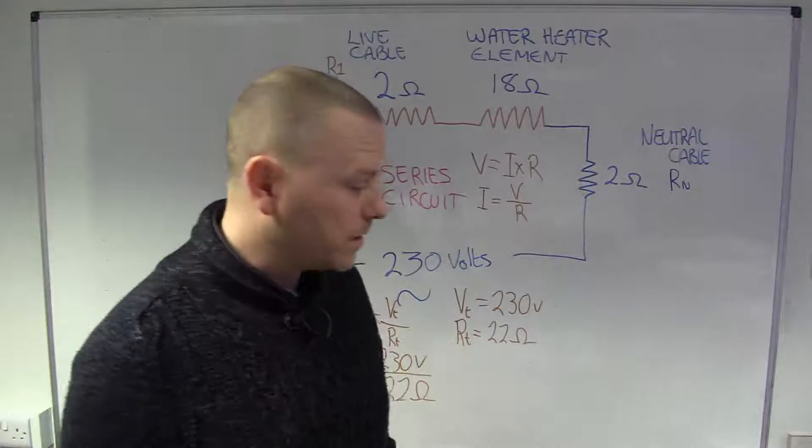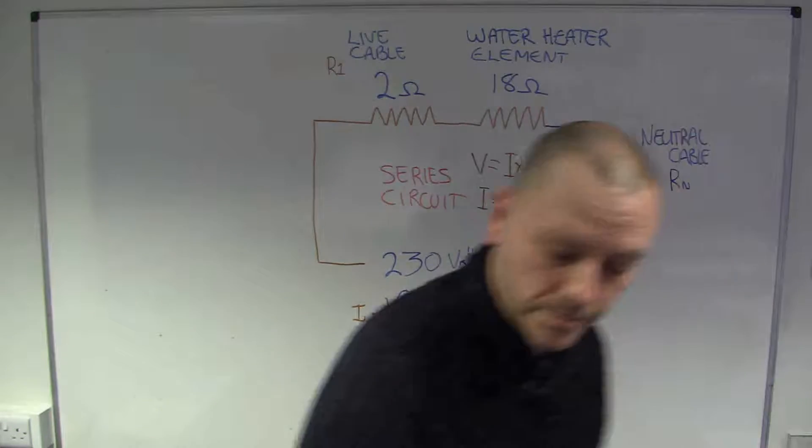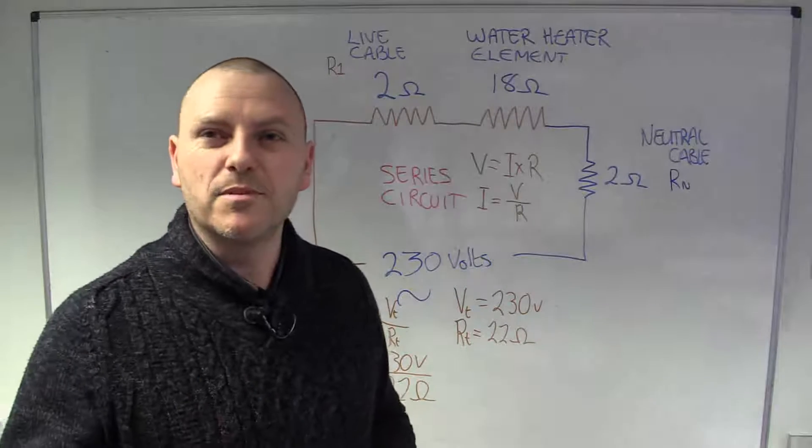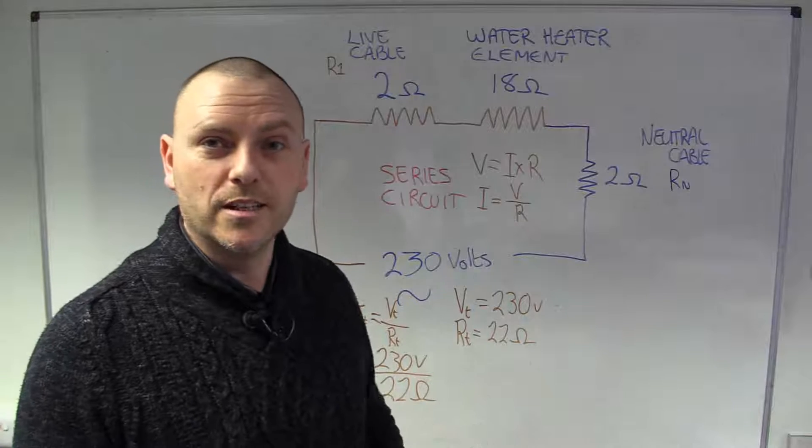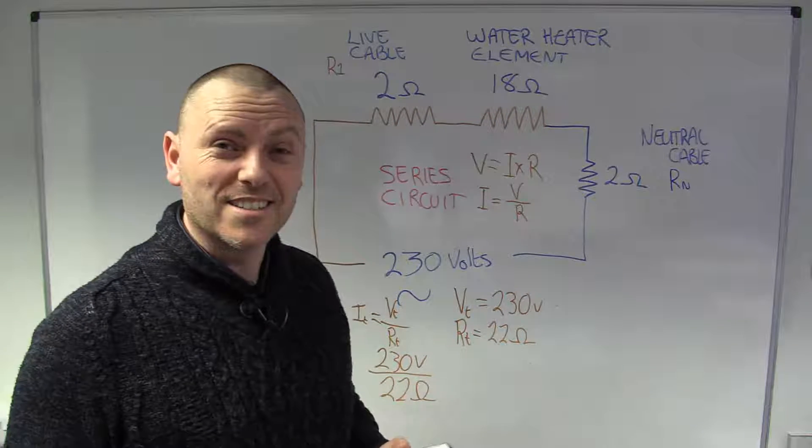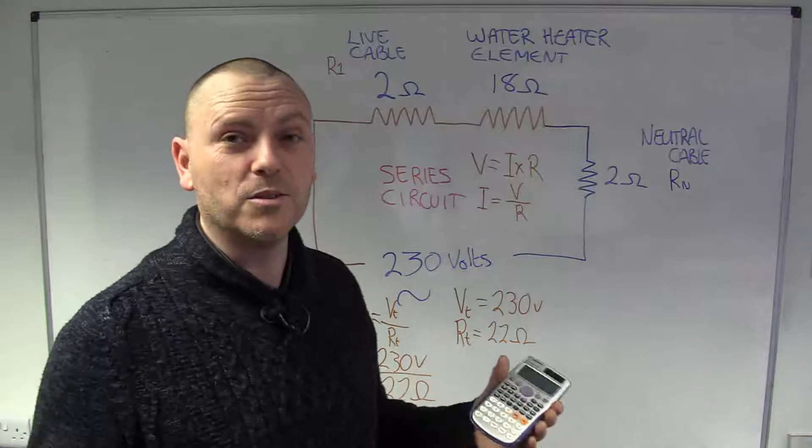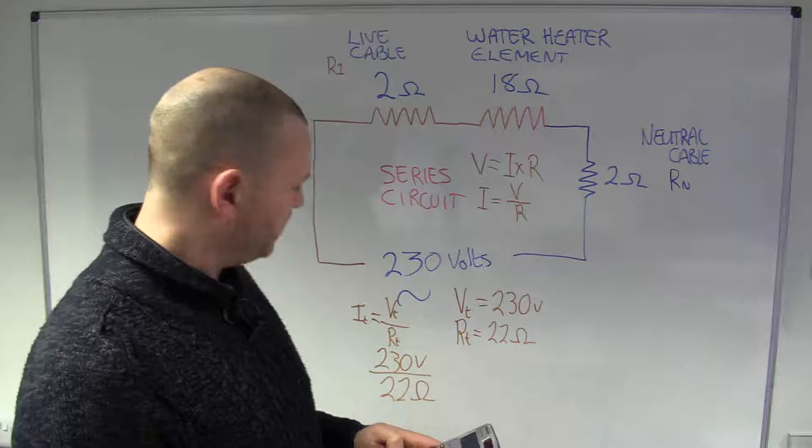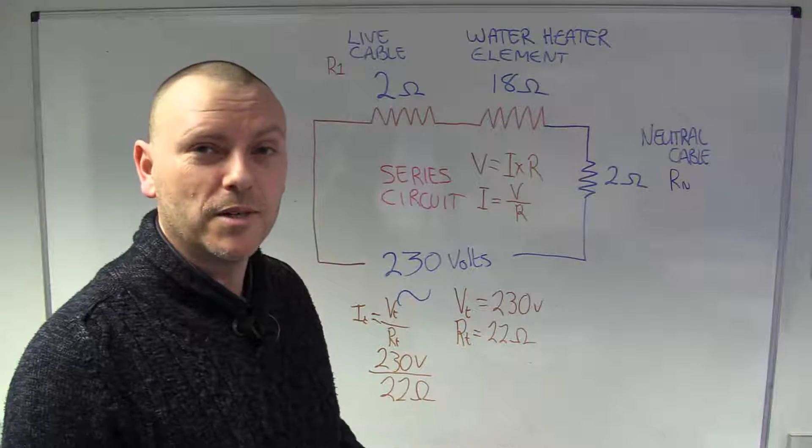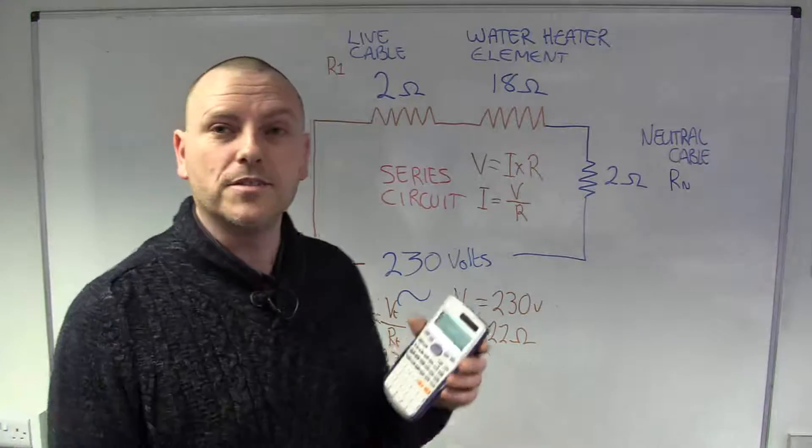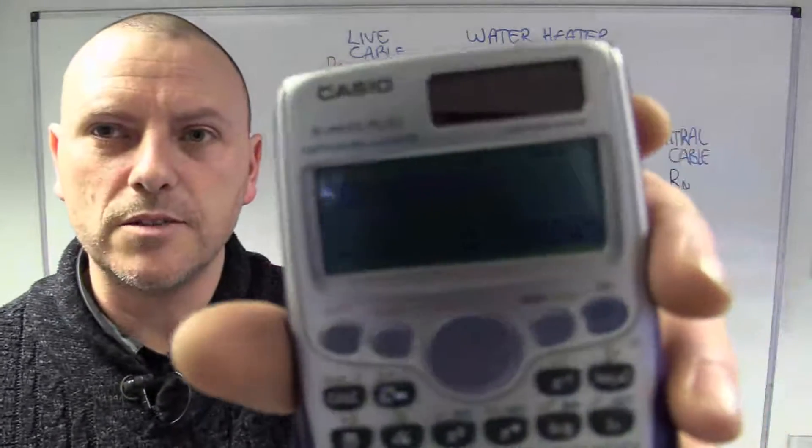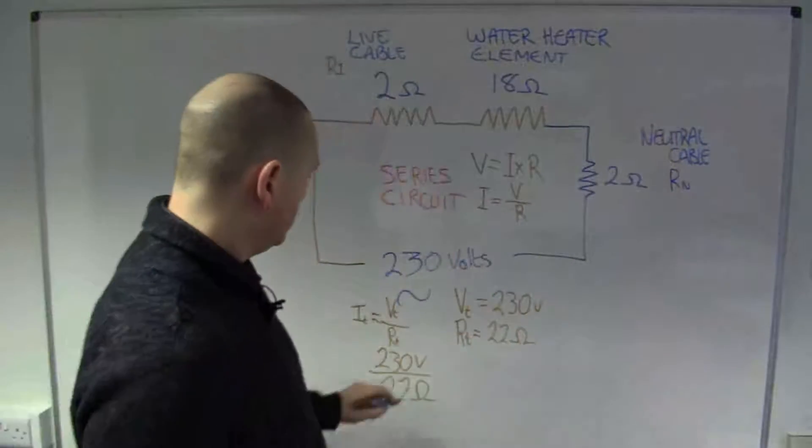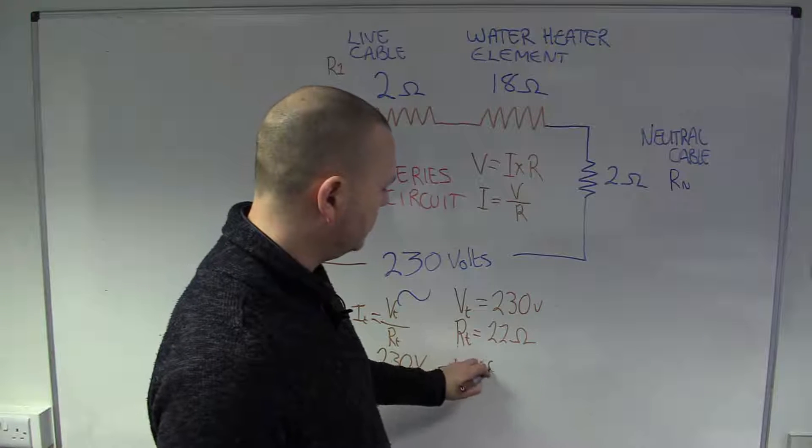Now, people who are quick at maths can probably work that out. Not me. See, I skipped a bit of school, and went straight into uni to learn maths, so, the basics I do actually struggle with, but I can do third-order linear differential equations, no problem. So, 230 volts, divided by 22 ohms, gives us a current flow of 10.45 amps.